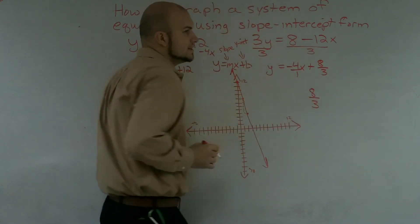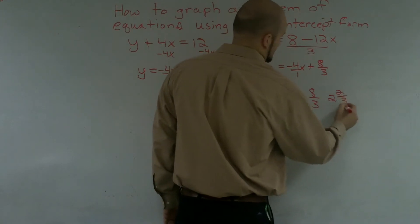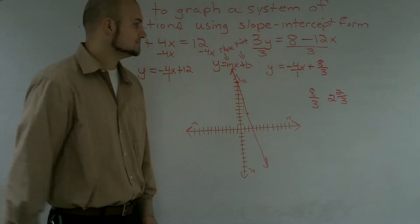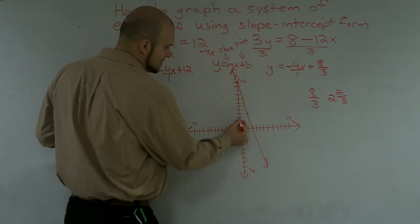So 8 thirds, we go 3 goes into 8 two times, with a remainder of 2, correct? So I'm going to go up 2, and then I'm going to go 2 thirds up.